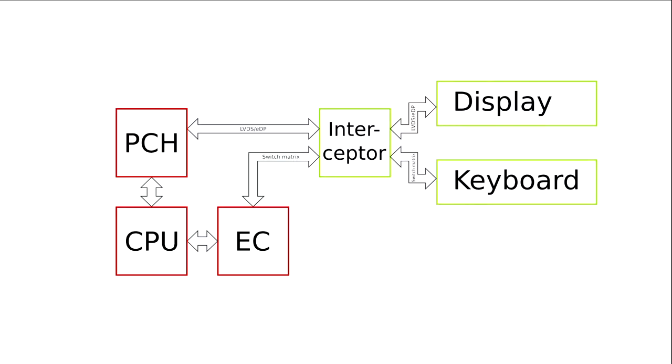So we need something in between these components that will receive hopefully only untrusted ciphertext from the Platform Controller Hub — which contains the integrated graphics — and from the embedded controller — which handles the keyboard matrix scanning — do some decryption, and forward the decrypted data to display and keyboard, which are fortunately pretty simple devices, ignoring embedded DisplayPort and HDCP.